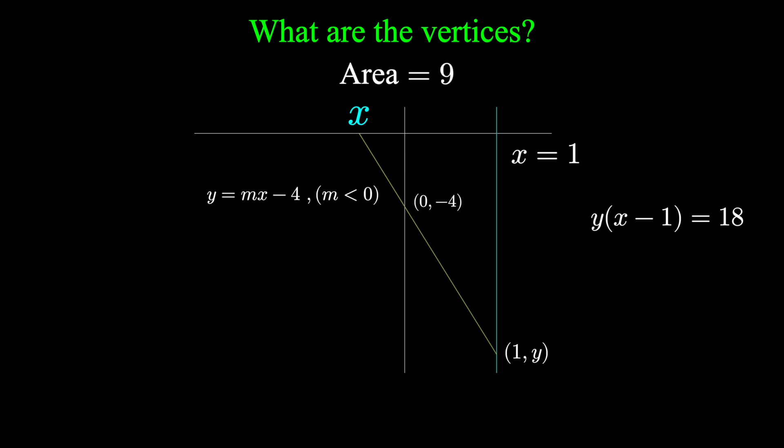Thus we have two different equations for the slope: one equation between the points x, 0 and 0, negative 4, and one equation from 0, negative 4 to 1, y. Using the formula for slope, y2 minus y1 over x2 minus x1, both of these have to equal m. We would have minus 4 minus 0 over 0 minus x, which equals y minus negative 4 over 1 minus 0. We can clean this up: y plus 4 equals 4 over x, and multiplying both sides by x, we'd have xy plus 4x equals 4.